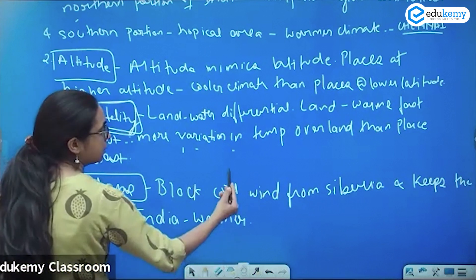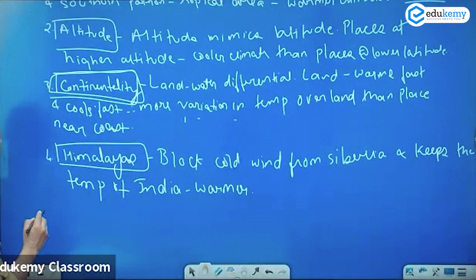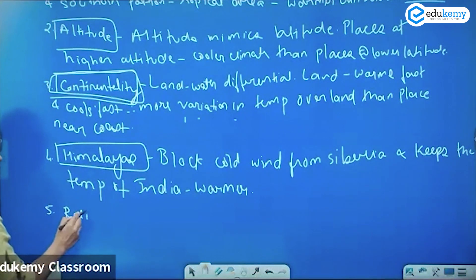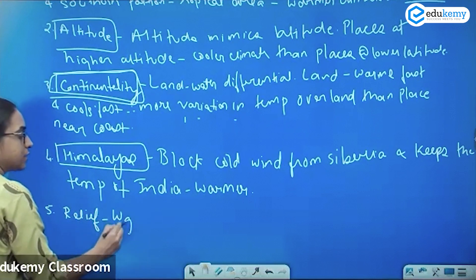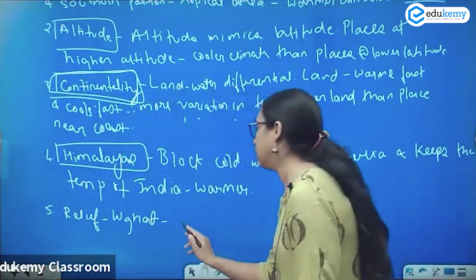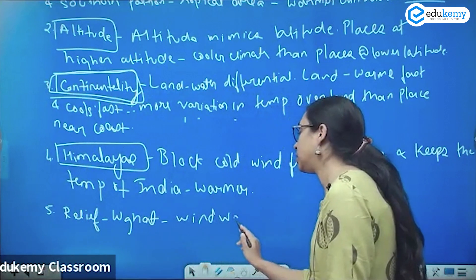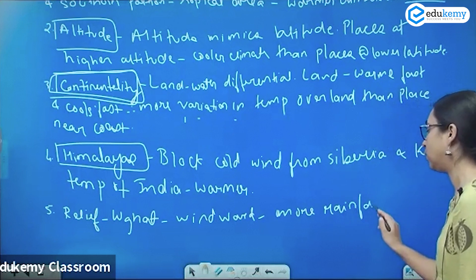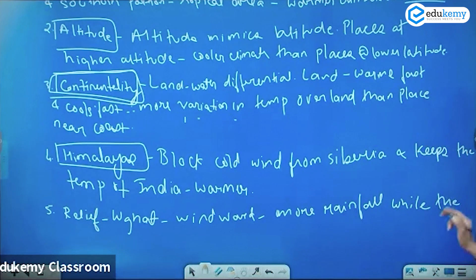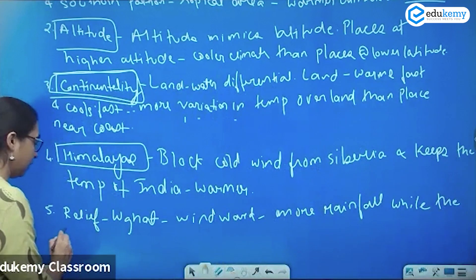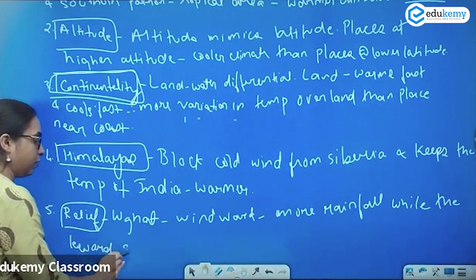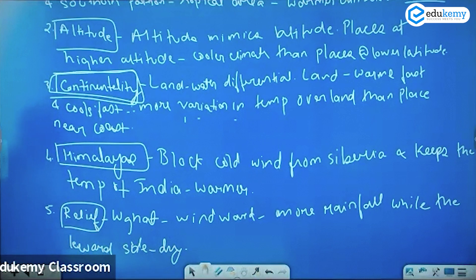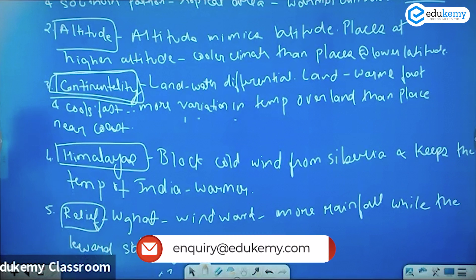Another important factor is the relief factor, which is different from altitude. For example, in the case of the Western Ghats, the windward side gets more rainfall while the leeward side is comparatively dry. This whole process is called adiabatic warming and adiabatic cooling.